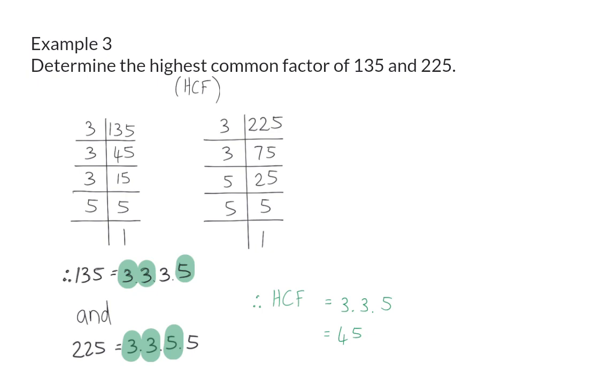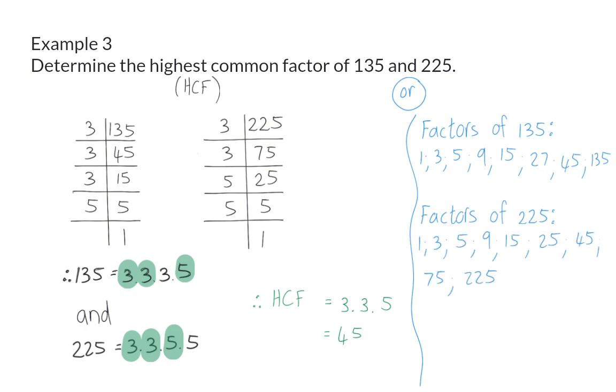Here, we determined the highest common factor by making use of prime factors, but you could also choose to use inspection. For this, you will have to write down the factors of 135 and the factors of 225. When you compare these factors, you will see that there are quite a few factors in common, but the biggest of these factors will be 45.